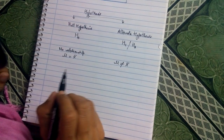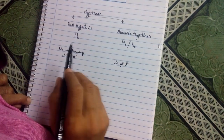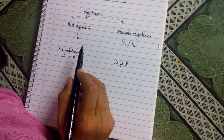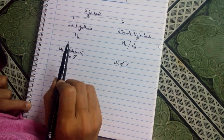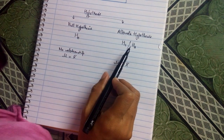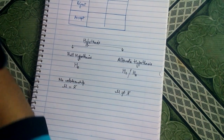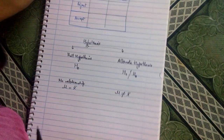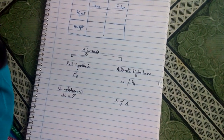In further videos we will discuss these types of hypothesis in detail. But for Type 1 error and Type 2 error, one should know at least what is null hypothesis and what is alternate hypothesis. Today we are going to learn how to decide whether a Type 1 error or a Type 2 error is occurring.